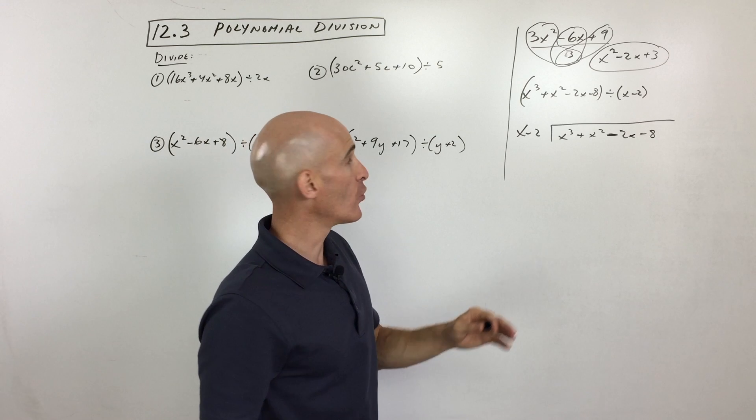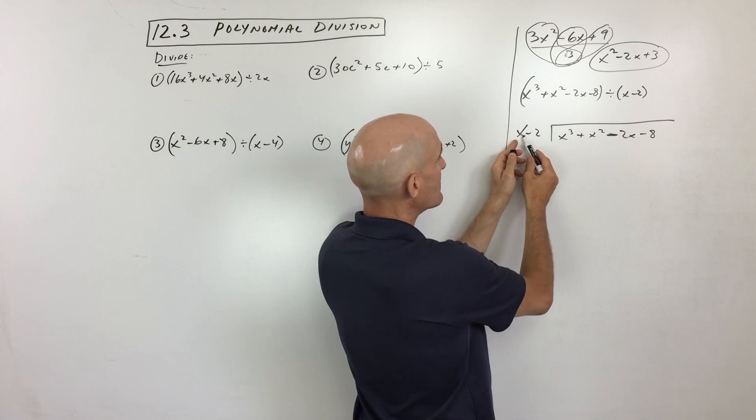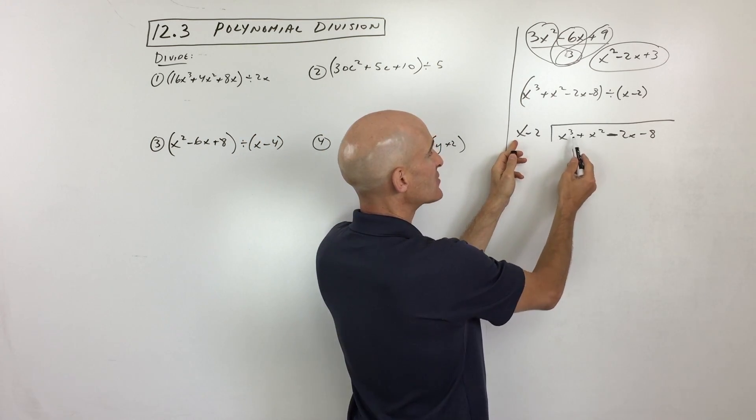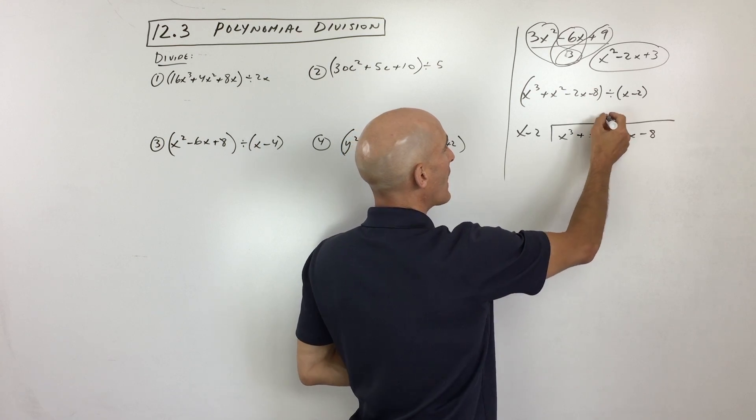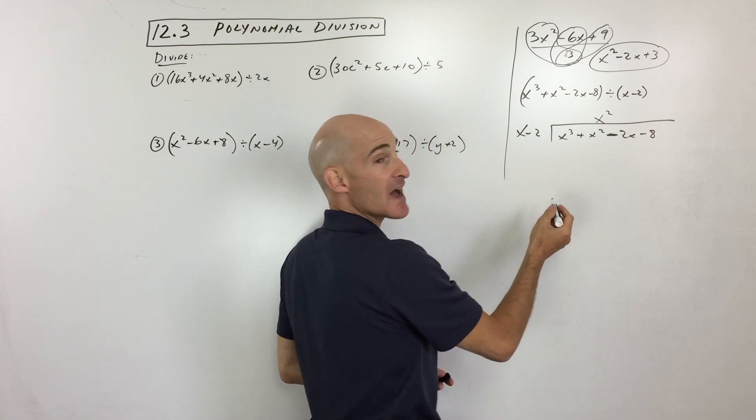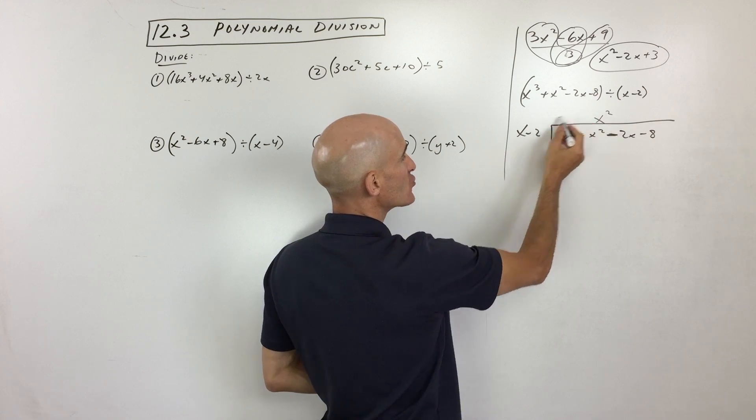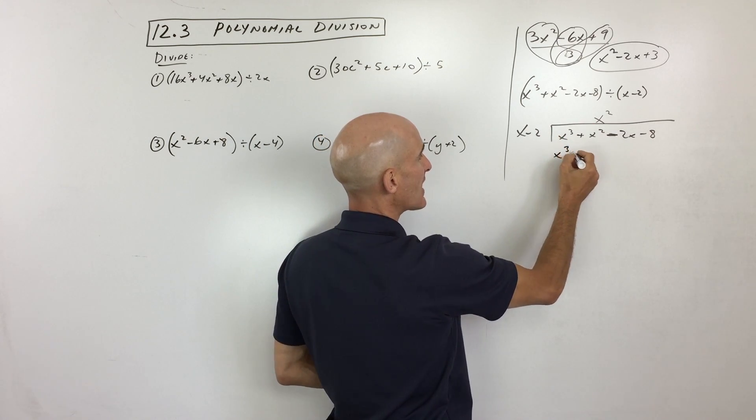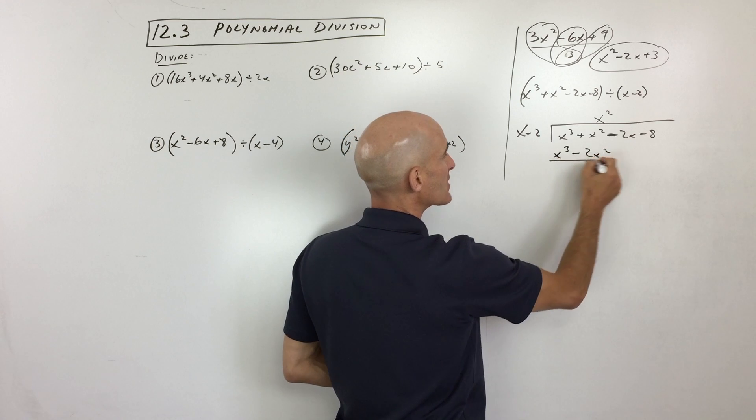Okay, so here's how you go about this. You say, how many times does x go into this first term, x cubed? Well, it goes in there one x squared times. So then what you do is you take that x squared and you distribute it to both of these terms. So that's x cubed minus 2x squared.